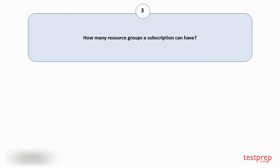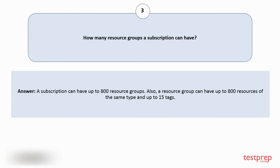Question number 3: How many resource groups can a subscription have? A subscription can have up to 800 resource groups. Also, a resource group can have up to 800 resources of the same type and up to 15 tags.